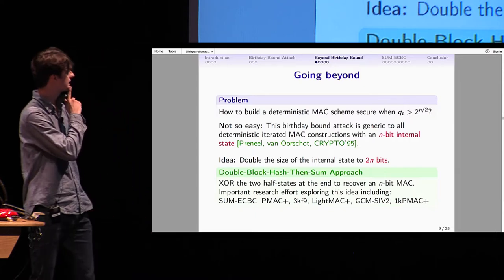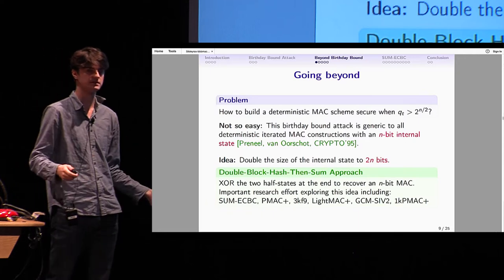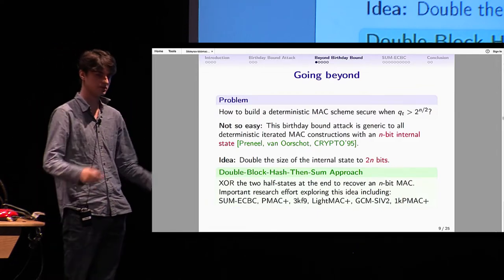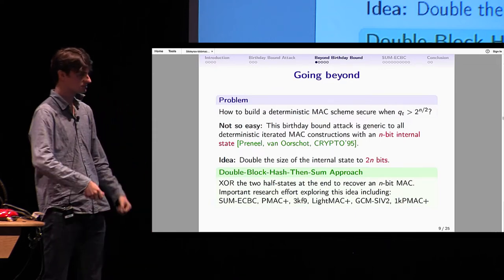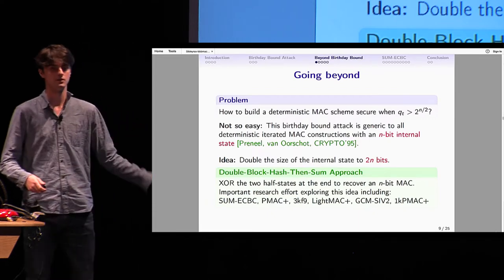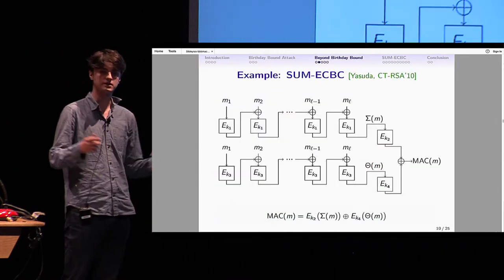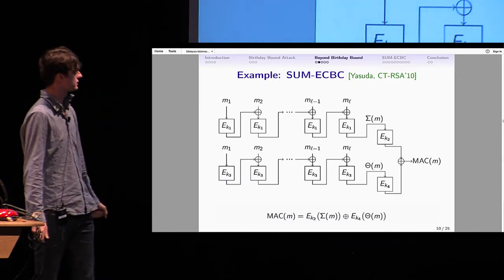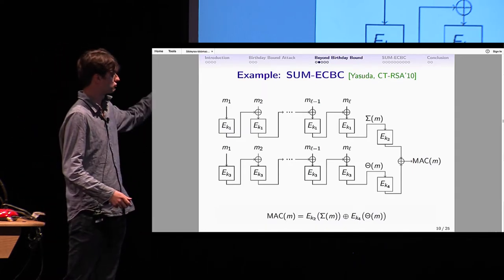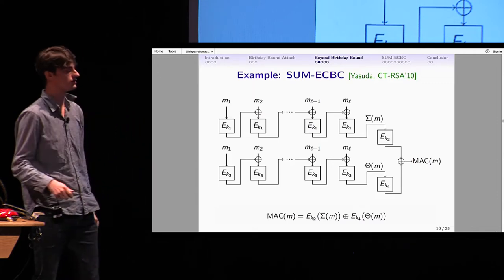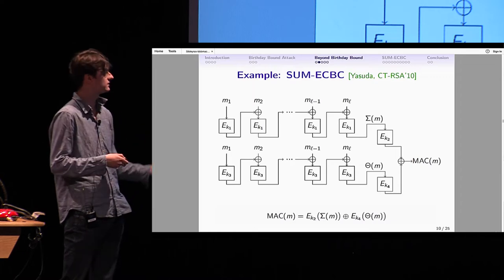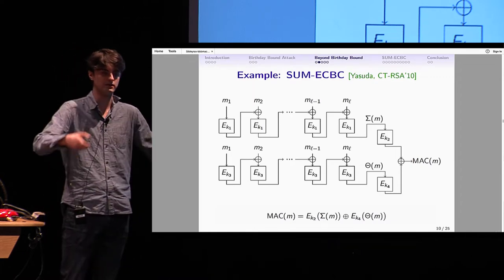So the idea is double the size of the internal state, so that collisions won't occur. In this talk, I particularly look at the double-block hashed-then-sum approach that deals with two n-bit half states, and to recover an n-bit MAC at the end, you just XOR the two halves and get your MAC. There's quite a lot of literature: SumECBC, PMAC+, 3KF9, LightMAC+, GCM-SIV2, 1KPMAC+. For example, probably the first such construction was SumECBC by Yasuda in 2010. It's just ECBC used again with a different key, and XOR the two ECBCs at the end. Now sigma is just half the state, and the whole state is sigma and theta. You have two n-bit internal states.